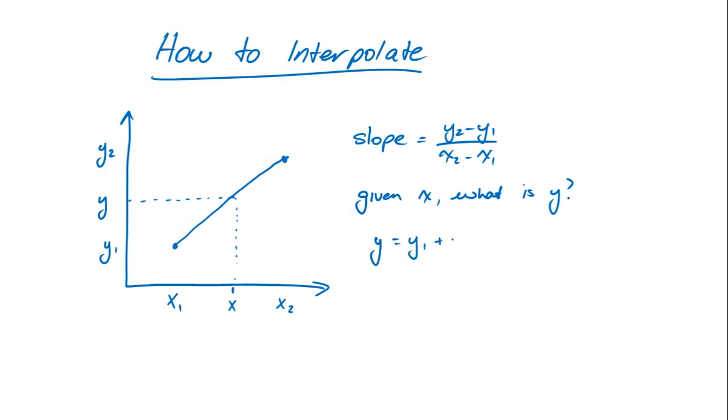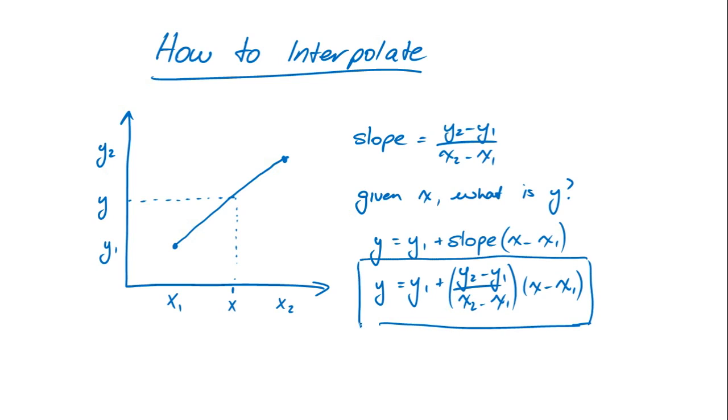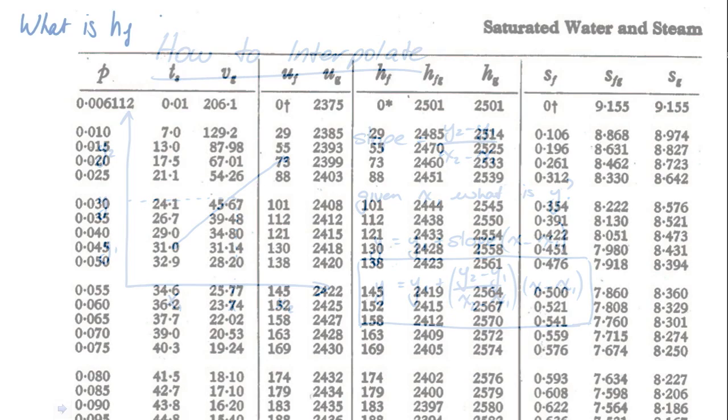We can calculate that value of y using y1, the slope of our line, and the difference between x and x1. If we expand that using the expression for slope from above, we get this expression, which is the expression that we'll use for interpolating in the steam tables to find values between two values.